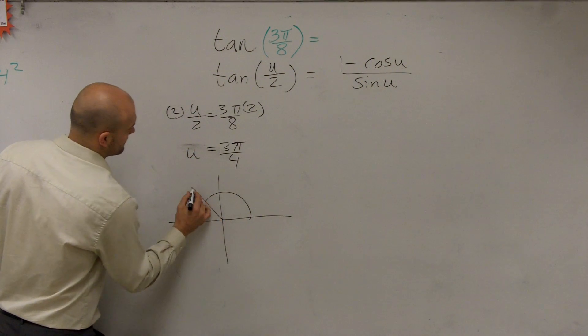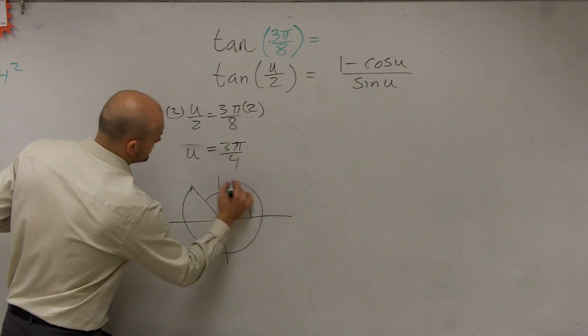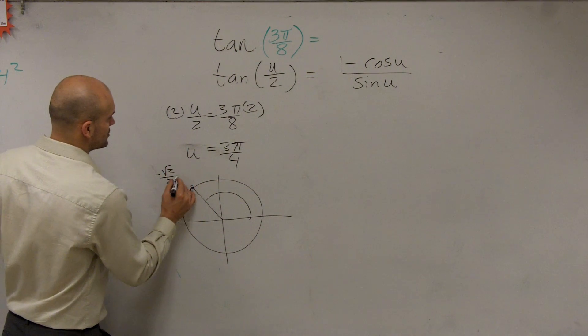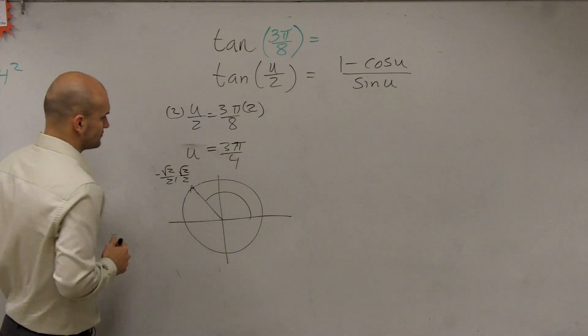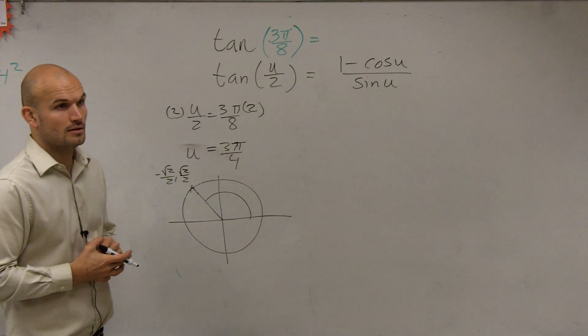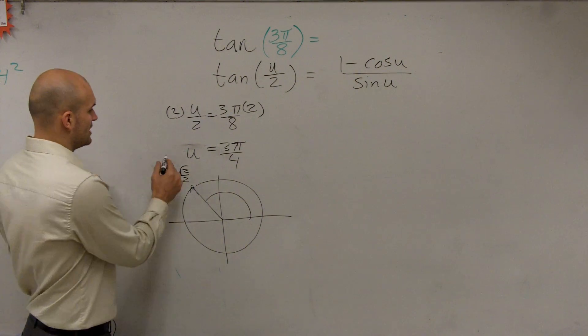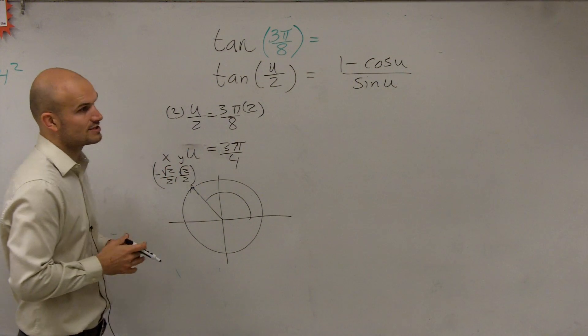And we say, alright, 3 pi over 4 is right here. On the unit circle, that's negative square root of 2 over 2 comma square root of 2 over 2. So now we know what our cosine and our sine coordinates are.